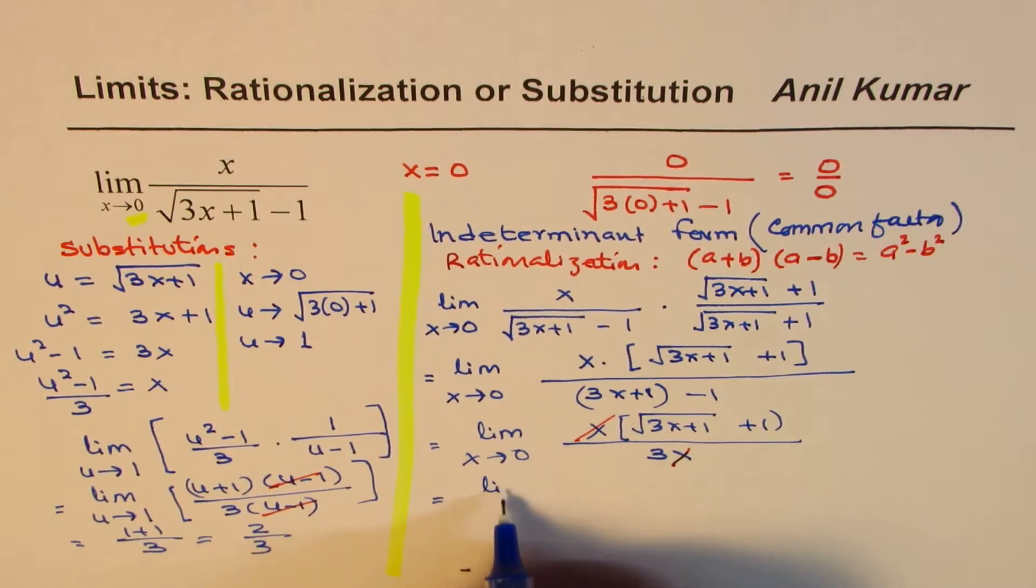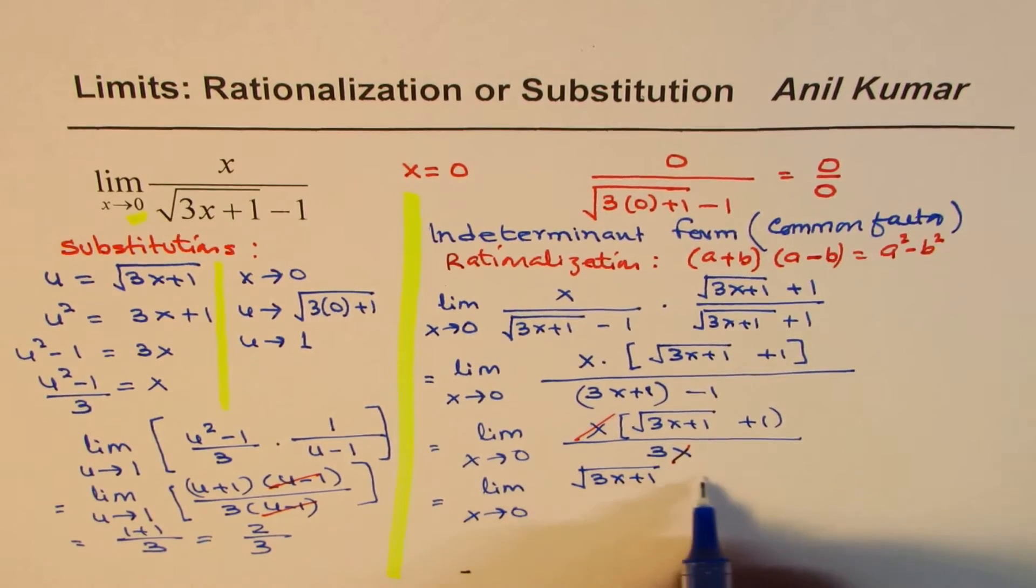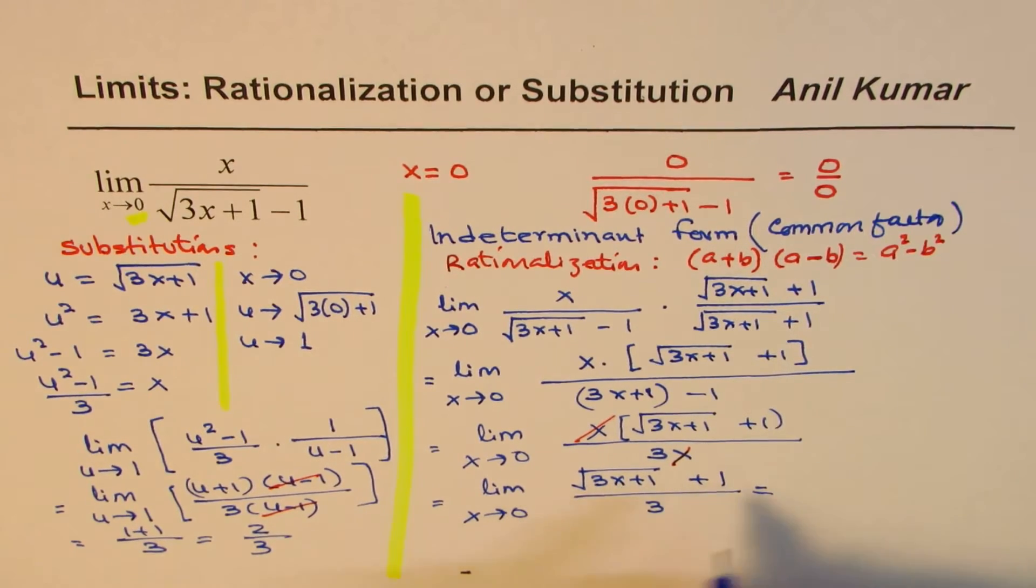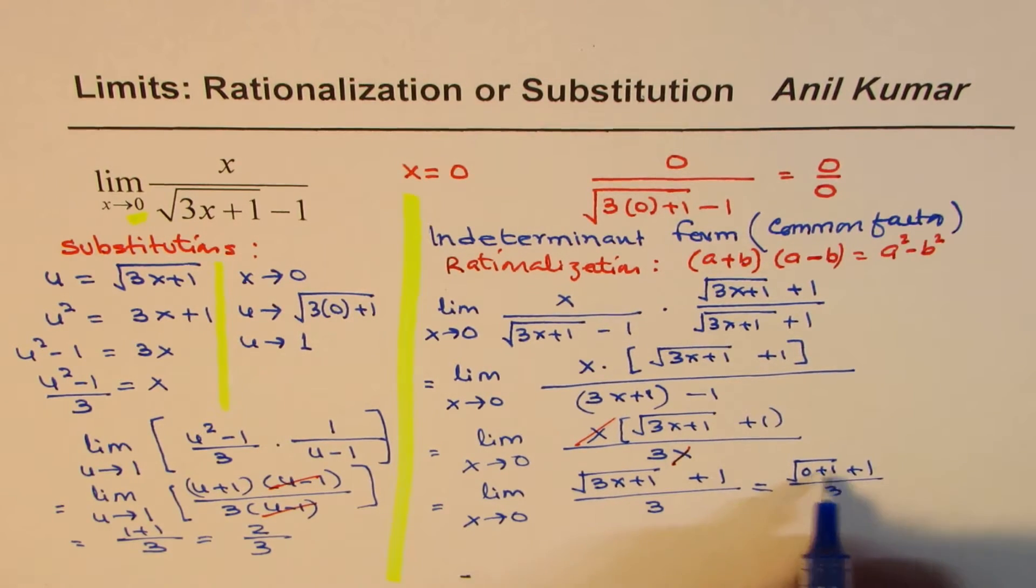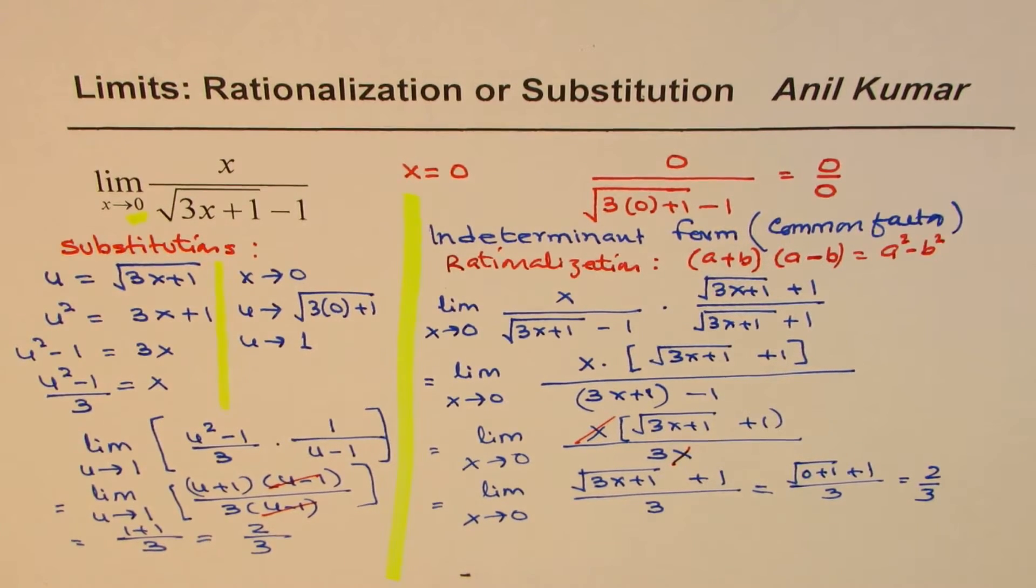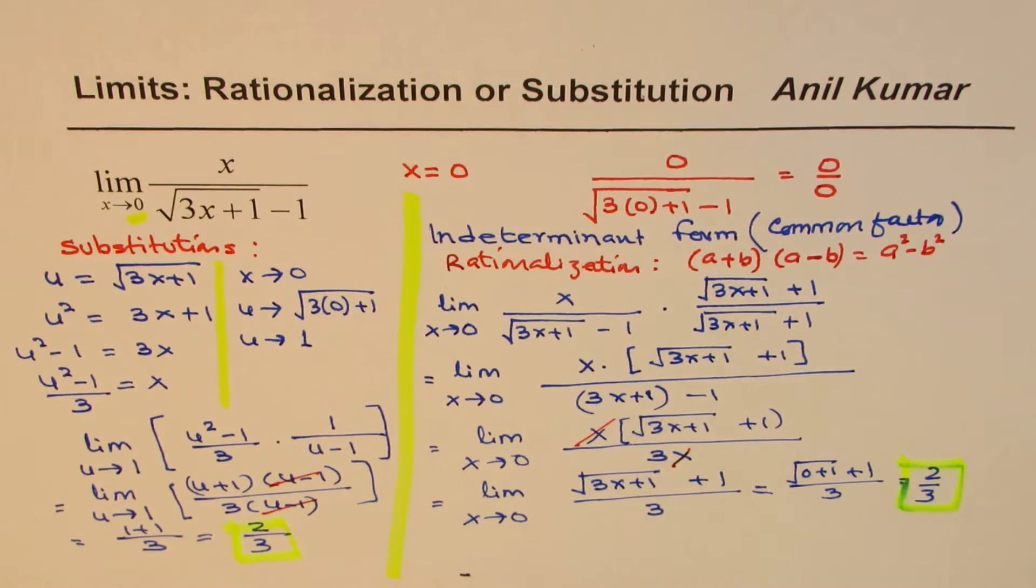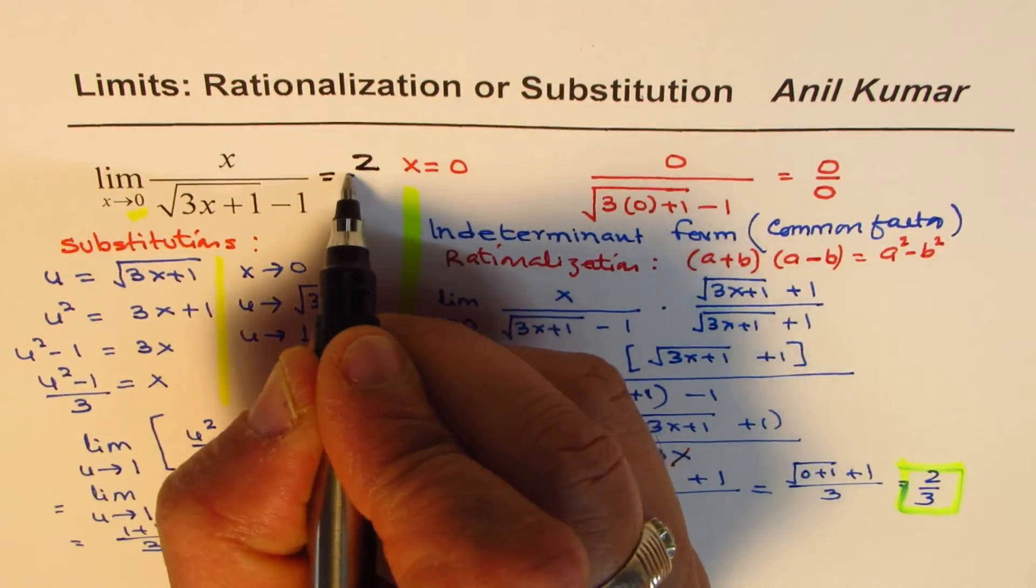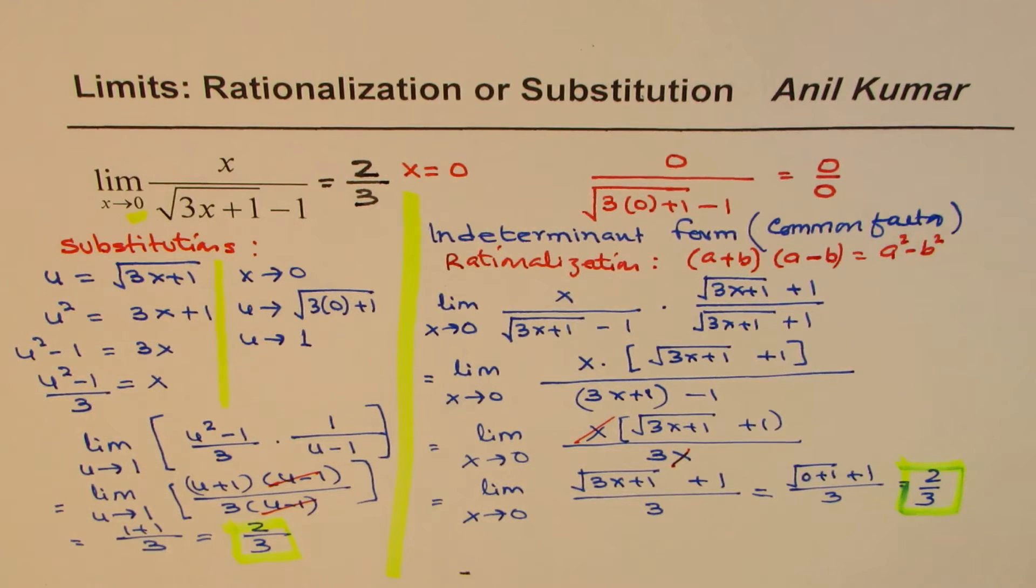And we are left with limit x approaches 0. And we have square root of 3x plus 1 plus 1 divided by 3. Now if I substitute 0 here, what do I get? Square root of 0 plus 1 plus 1 divided by 3. This is 1. 1 plus 1 is 2. So we get 2 over 3. So what we get is exactly what was expected. 2 over 3 is our answer. So that is the limit of this function when x approaches 0. So it is 2 over 3. So that is how you can find limit of such functions.